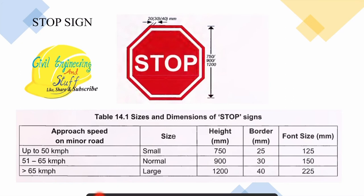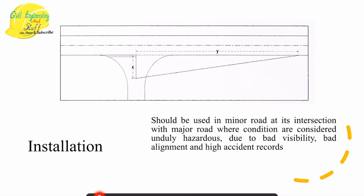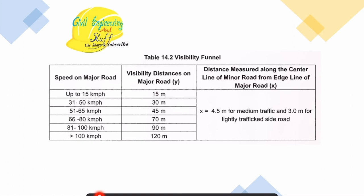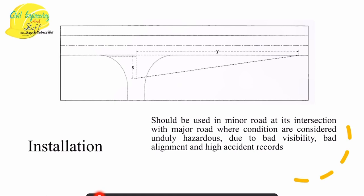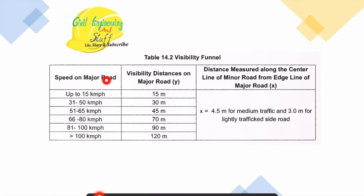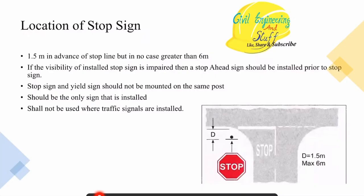Repeater signs are those which convey similar information and are placed in the same section of the road. The dimensions of stop signs also depend upon the speed limit of the road section. If the speed is up to 60 km/h then the size will be small, and the height, border, and font size are all specified in the code. The installation of a stop sign also depends upon the visibility — we have a table based on Y, the visibility to the major road, and X, the visibility from the minor road.